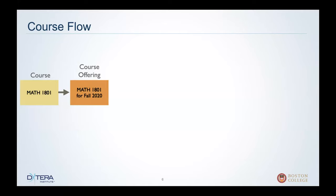When we want to offer a course in a particular term — in this case, you'll see Math 1801 being offered for Fall 2020 — it is at this stage that we bring a lot of the logistical information about when that course is meeting, who may be teaching it, what its capacities are, and so forth. So a course offering is essentially a course in a term plus a bunch of logistical information to manage the registration process.